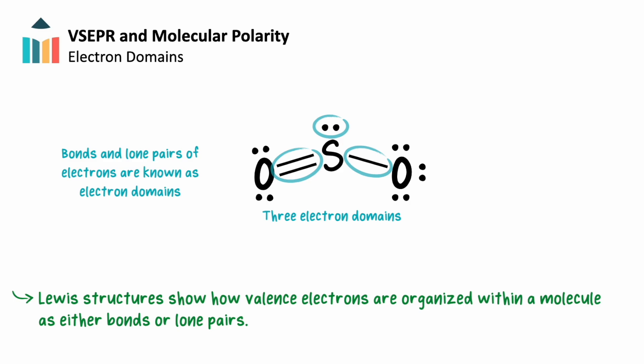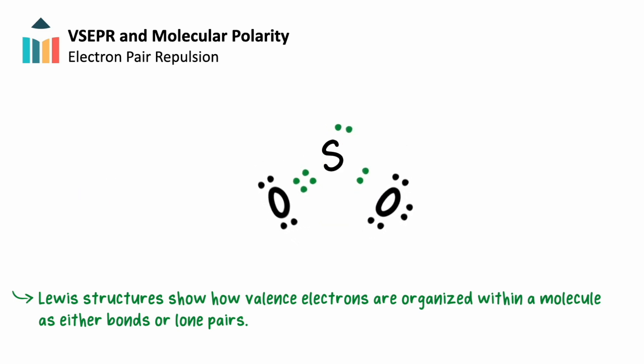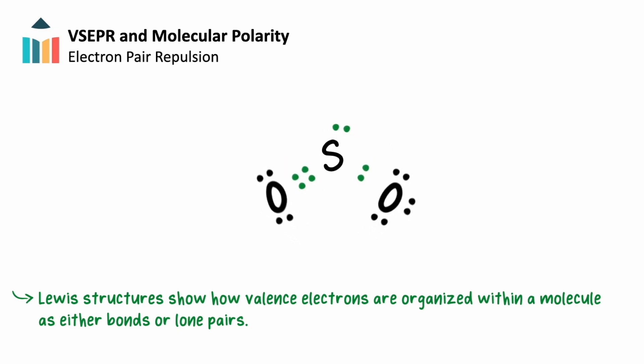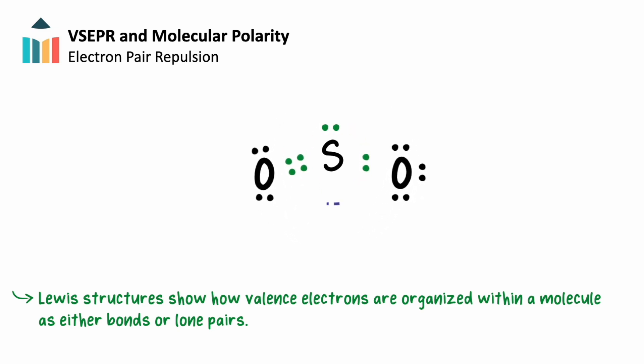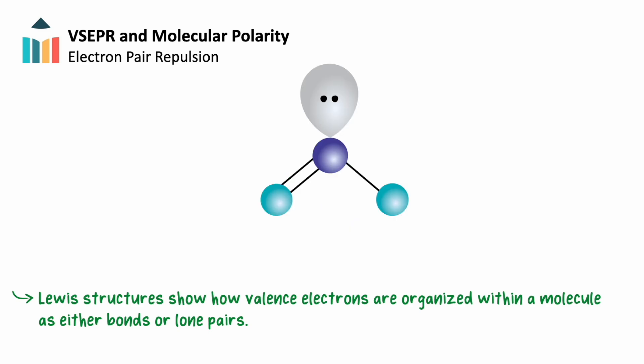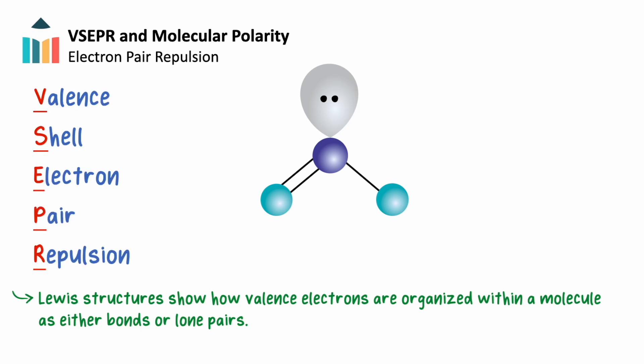The electrons within these domains are constantly repelling each other, pushing the domains to arrange themselves in three-dimensional space to minimize this repulsion and maximize the angle between each bond. We can analyze a structure's electron domains to help predict the shape around the central atom. This is called valence-shell electron pair repulsion, or VSEPR theory.